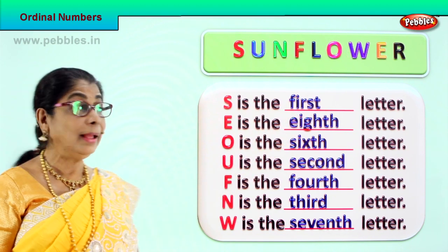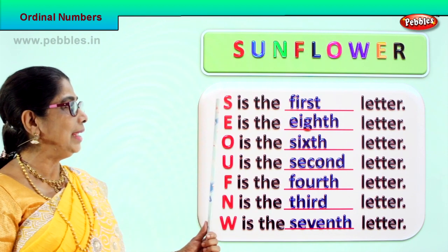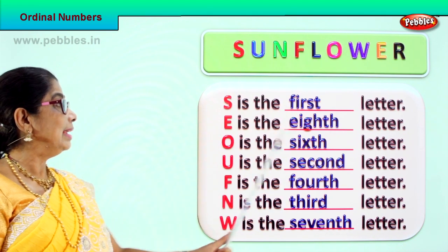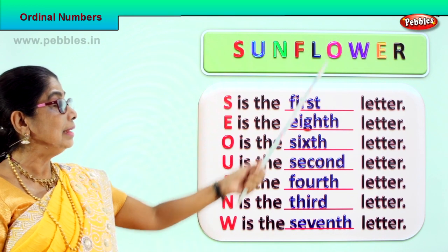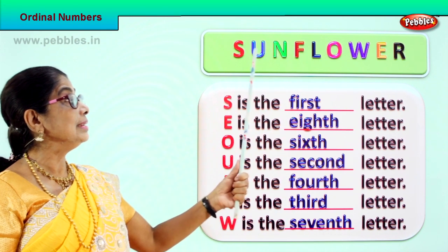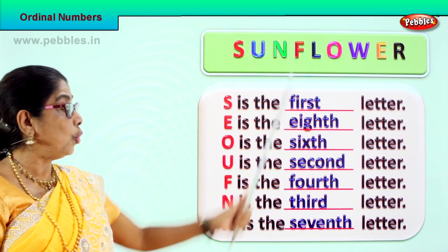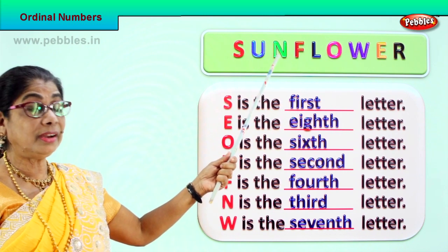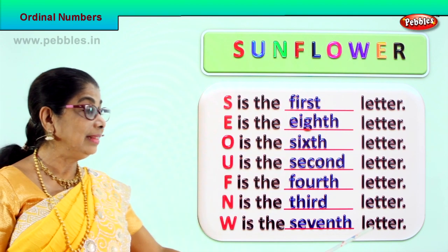We learned the ordinal position of each of these letters in sunflower. S is the first letter. E is the eighth letter. O is the sixth letter. U is the second letter. F is the fourth letter. N is the third letter. W is the seventh letter.